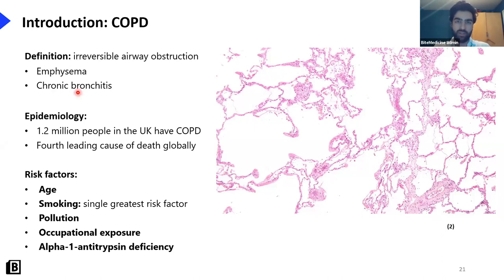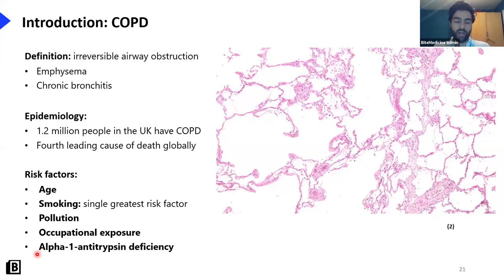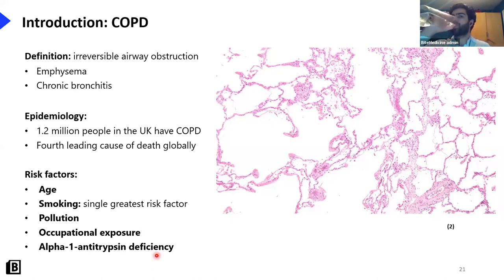In emphysema there is destruction of the alveoli, which become large air sacs — compare that to normal tightly packed small alveoli. Because of the lower surface area you have less diffusion occurring, leading to hypoxia and hypercapnia. You also get the bronchi secreting mucus and becoming inflamed — chronic bronchitis. COPD is the fourth leading cause of death globally, common in older patients; smoking is the biggest risk factor. In a young patient with emphysema, think alpha-1 antitrypsin deficiency — a genetic condition affecting both the lungs and the liver, causing liver cirrhosis and emphysema at a young age.